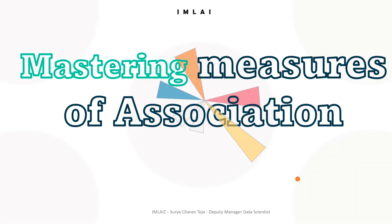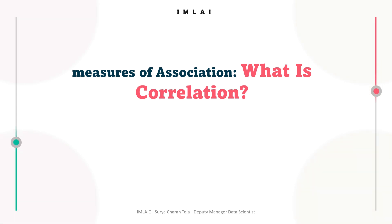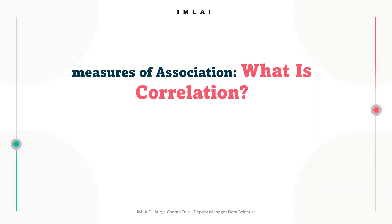Now it's time to start exploring relationships between variables. Let's begin with correlation. What is correlation in statistics? Correlation measures the strength and direction of a linear relationship between two continuous variables. It ranges from minus 1 to 1, where minus 1 indicates a perfect negative correlation, 0 indicates no correlation, and 1 indicates a perfect positive correlation.